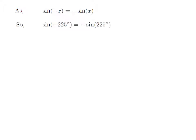Let us apply the above identity for sine of minus 225 degrees. Here, x is 225 degrees. So, sine of minus 225 degrees is equal to minus sine of 225 degrees.